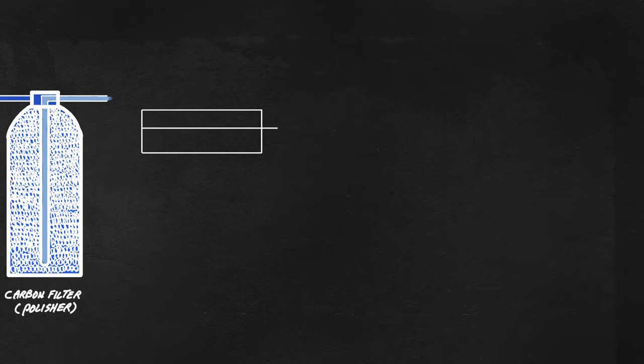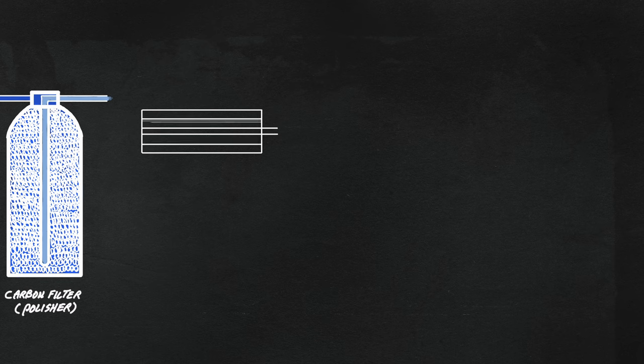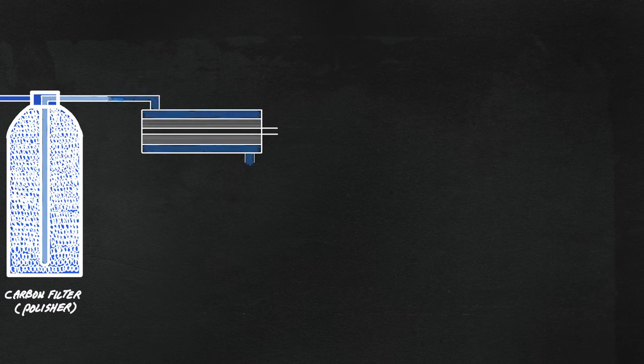Next step is purification. The most common method is reverse osmosis, which has its own high pressure pump and semi-permeable membrane to purify water. This is an example of a double-pass system, where the water goes through the membrane twice.